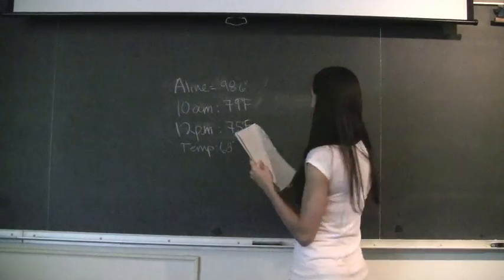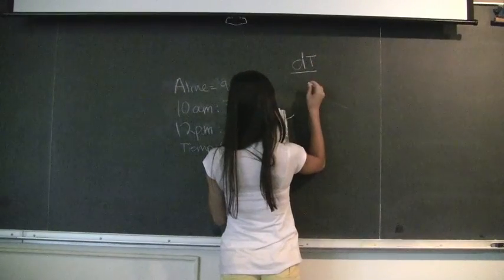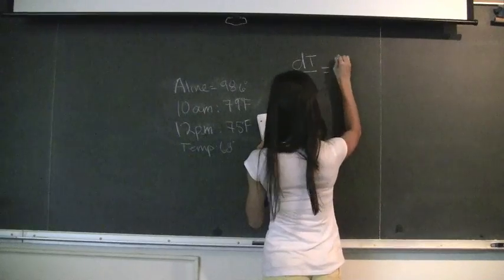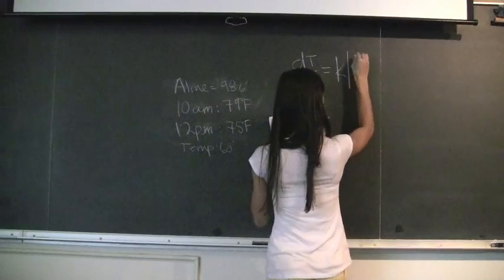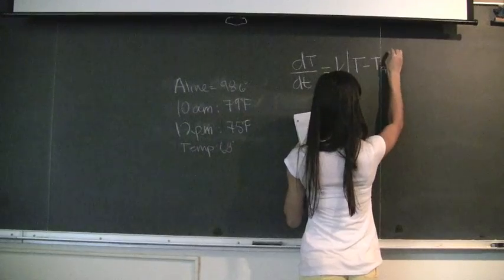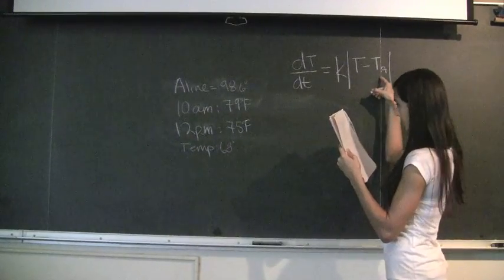The equation for Newton's law of cooling is dt over d little t equals k and the absolute value of t minus t sub a, when t sub a is the ambient temperature, which is 68 degrees.